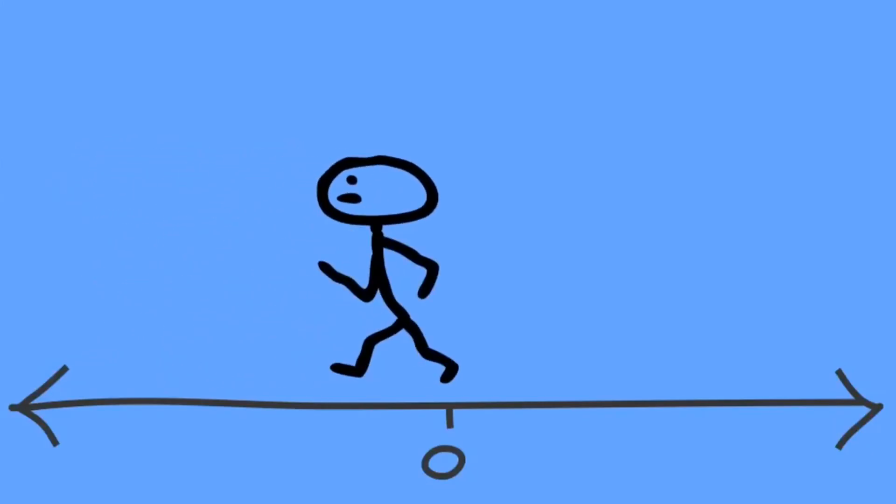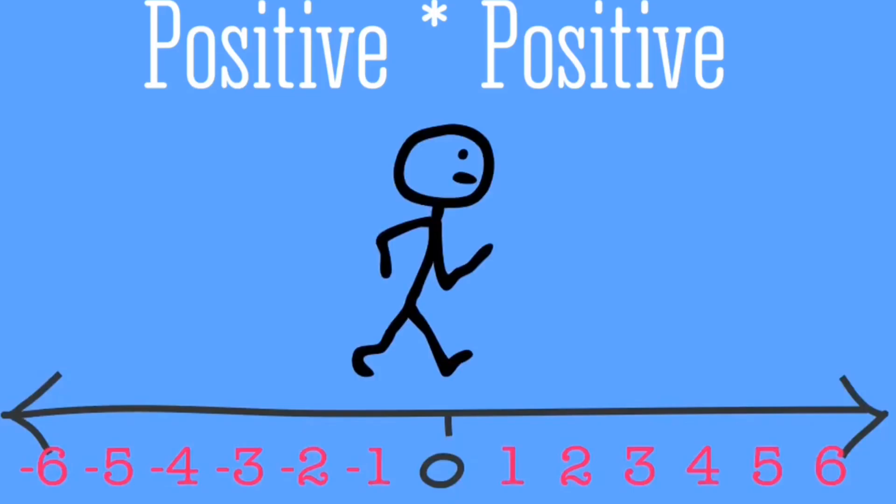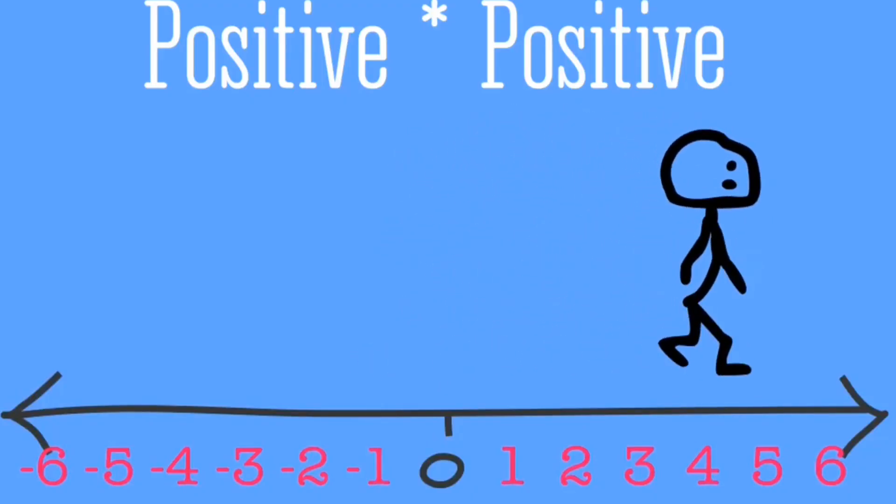In our first example, the first factor is positive. That means that our person on the number line will be facing right. And the second factor is also positive. So the person on the number line will be walking forward. This results in a positive product.